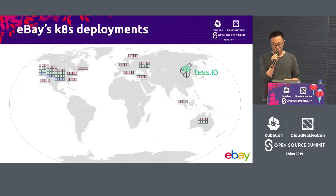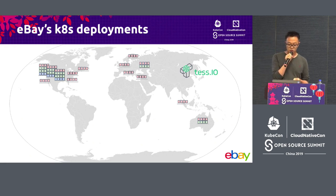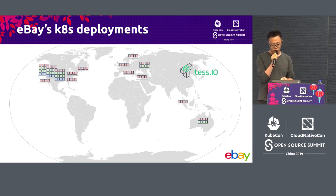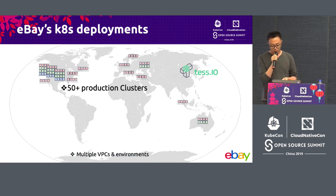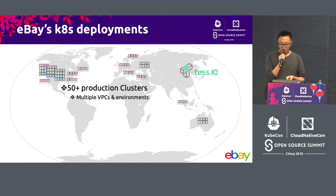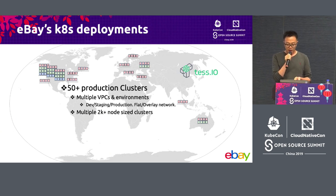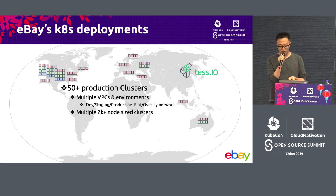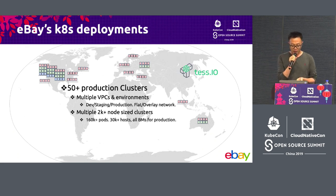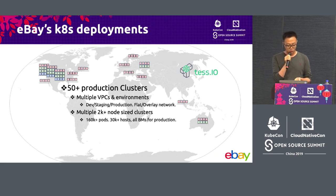First things first — eBay is one of the earlier adopters of Kubernetes. We started since 2015. We run an internal distribution called tess.io. Within the past few years we've moved massive production workloads into containers running on Kubernetes. As of now we have 50-plus production clusters. We run multiple VPCs for different environments. We have both flat network and overlay network based on OVN, and we have multiple 2,000-plus sized clusters with heavy production workloads. For now we have roughly 160,000 pods running on about 30,000 hosts.